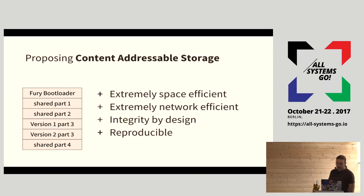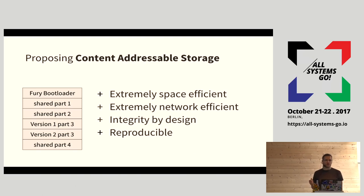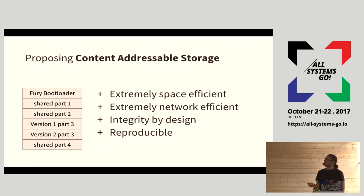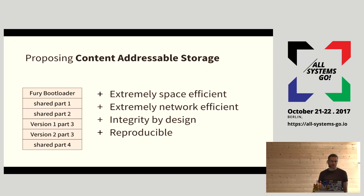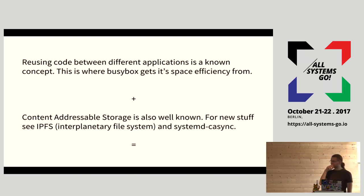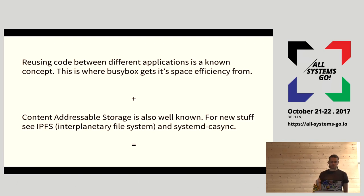What I'm proposing for IoT is: using content-addressable storage, we can store both systems but only the parts that are actually different - it's more network efficient. The key new element is you can store three system images and do things like A/B testing. Most of the system image between versions is actually shared - same code. We don't deduplicate it because our tools are terrible. We do know how to share application code - that's what BusyBox does, multiple executables in one executable.